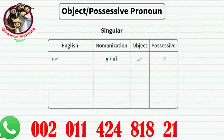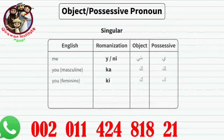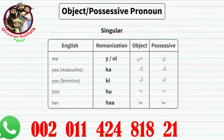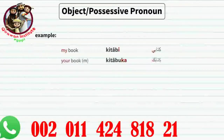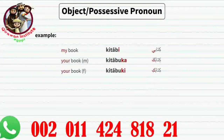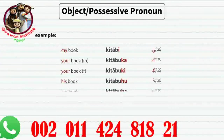These are the object possessive pronouns in Arabic. For example with the word kitab (book): kitabi (my book), kitabuka (your book, m.), kitabuki (your book, f.), kitabuhu (his book), kitabuha (her book).